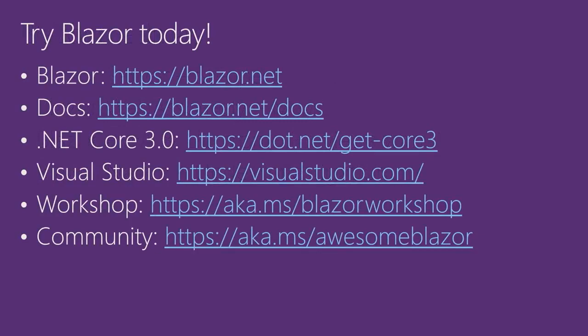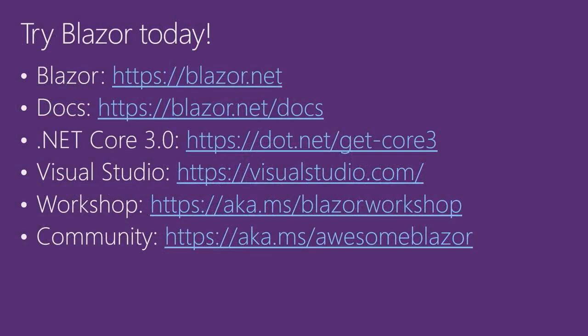That is the future of Blazor on the client. I hope you enjoyed what you saw and are excited about it. Give them a try — try out Blazor and Electron with the sample, try out Blazor WebAssembly, give us feedback. Make sure you download .NET Core 3.0 today. Go to blazor.net to get the bits and find the documentation. You can get the .NET Core 3.0 bits at dotnet/get-core3. Make sure you get Visual Studio 16.3 if you're on Windows. We have a wonderful Blazor workshop and a great community with folks like Chris Sainty who have built JavaScript interop libraries and component libraries.